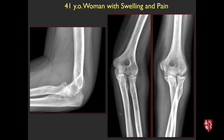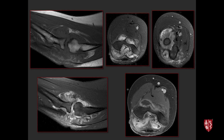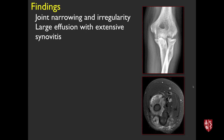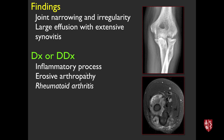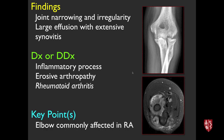41-year-old with swelling and pain in the elbow. MRI shows extensive synovitis at the radiocapitellar joint with a lot of fluid. This looks like an inflammatory, erosive arthropathy — this is rheumatoid arthritis, fairly common in the elbow.